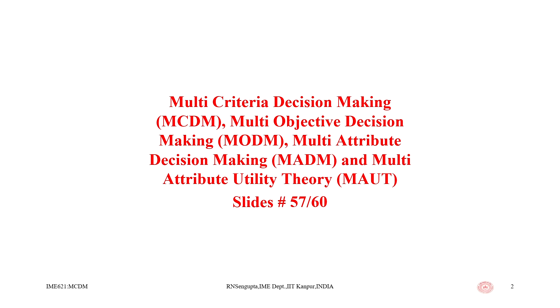In the last lecture for the 12th week, we started the discussion about Data Envelopment Analysis, and rather than solve problems I discussed in detail the basic concepts of DEA. This is the 57th lecture. The whole course covers multi criteria decision making — we have covered multi objective decision making, multi attribute utility theory, and under multi attribute decision making: ELECTRE, Epsilon ELECTRE, TOPSIS, VIKOR, AHP, and we are now into DEA, which is the last part covering non-parametric methods.